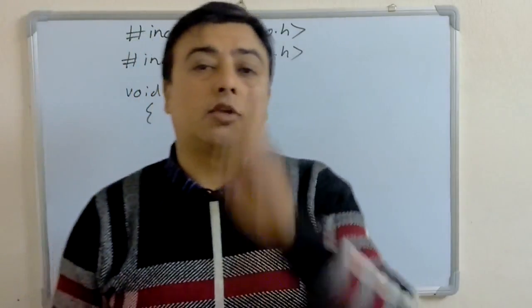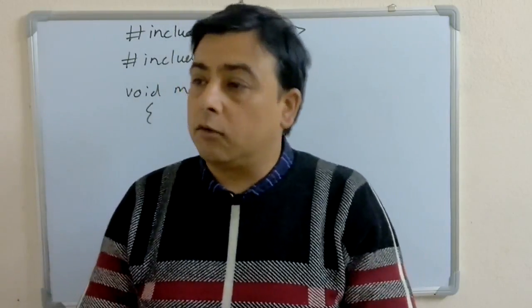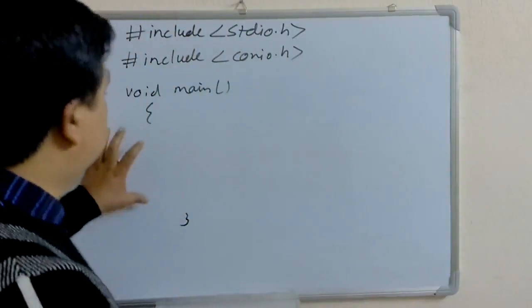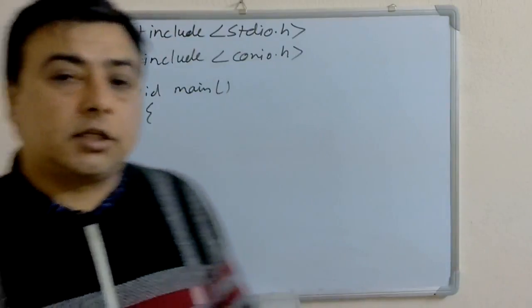In C, there is one main function. Whatever we execute, that we write inside the main function. And main function contains two parts. One is declaration part and another is executable part.